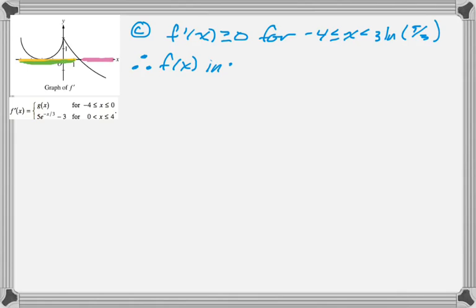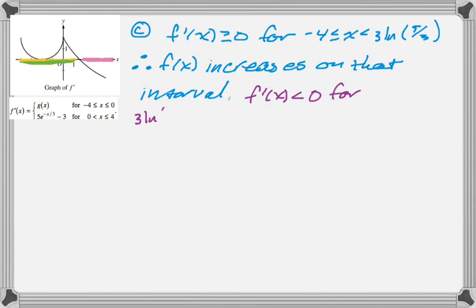So f prime is less than or equal to 0 on the interval negative 4 to that weird value they give you. Therefore, we know that f is increasing. I don't remember if I said greater than or equal to or less than or equal to. But it's definitely greater than or equal to. So we know that f of x increases on that interval. And then on this next one, we know f prime is less than 0 from that x value to 4 for sure.